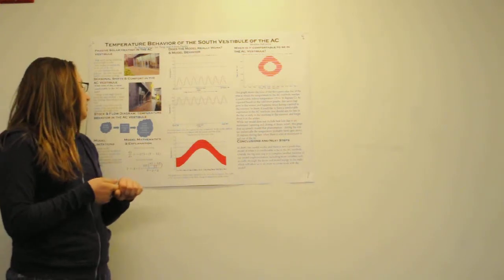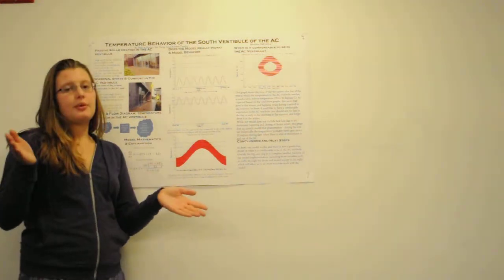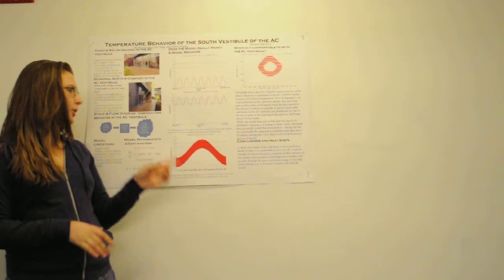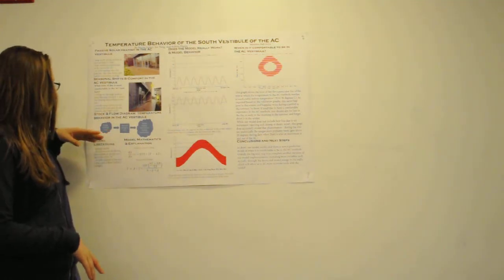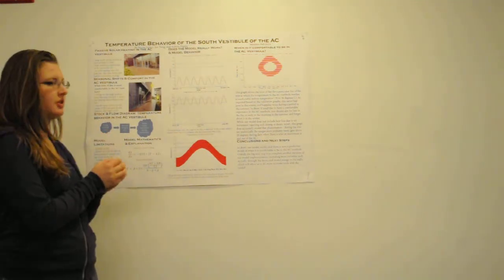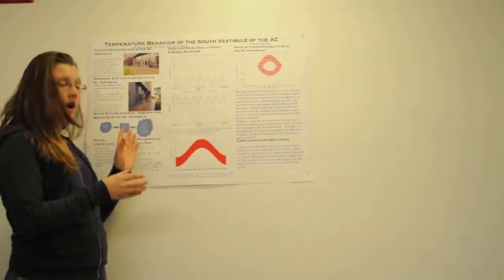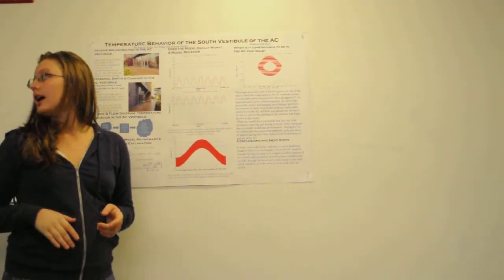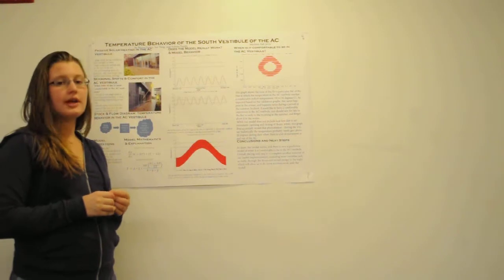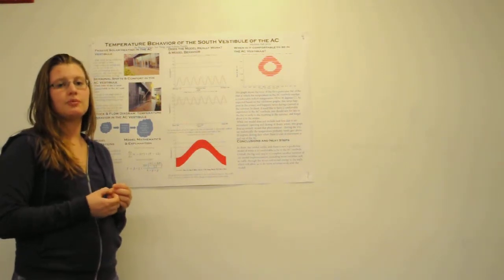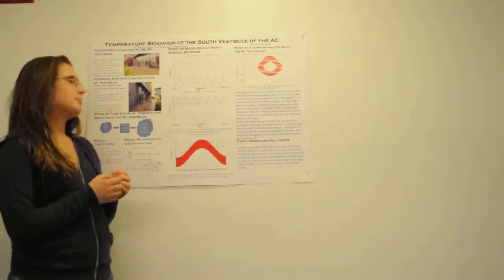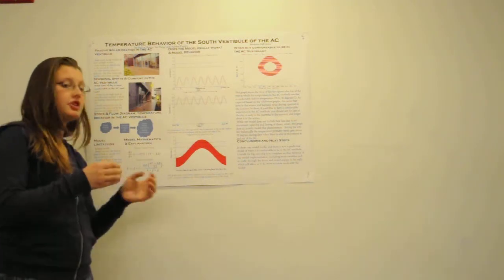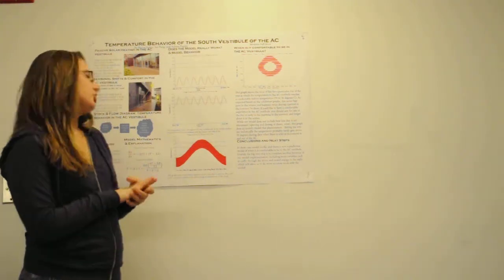And that leads very nicely into our stock and flow diagram. We only have one source of flow into the stock and one flow out of the stock. Our stock is thermal energy in the room. Our flow into the room is heat energy from the sun, and our flow out of the room is energy exiting due to convection cooling.